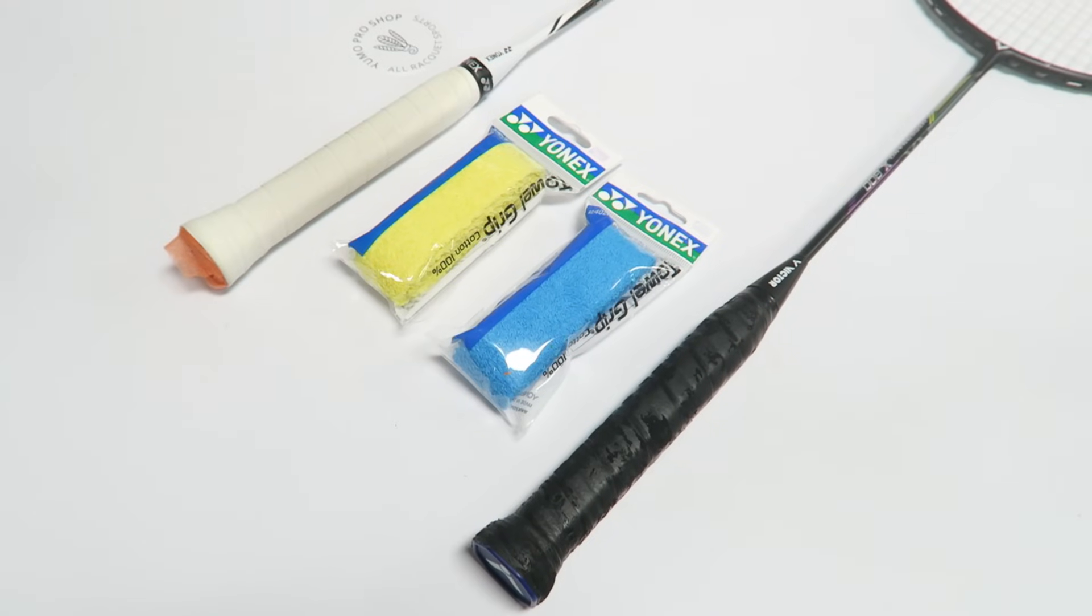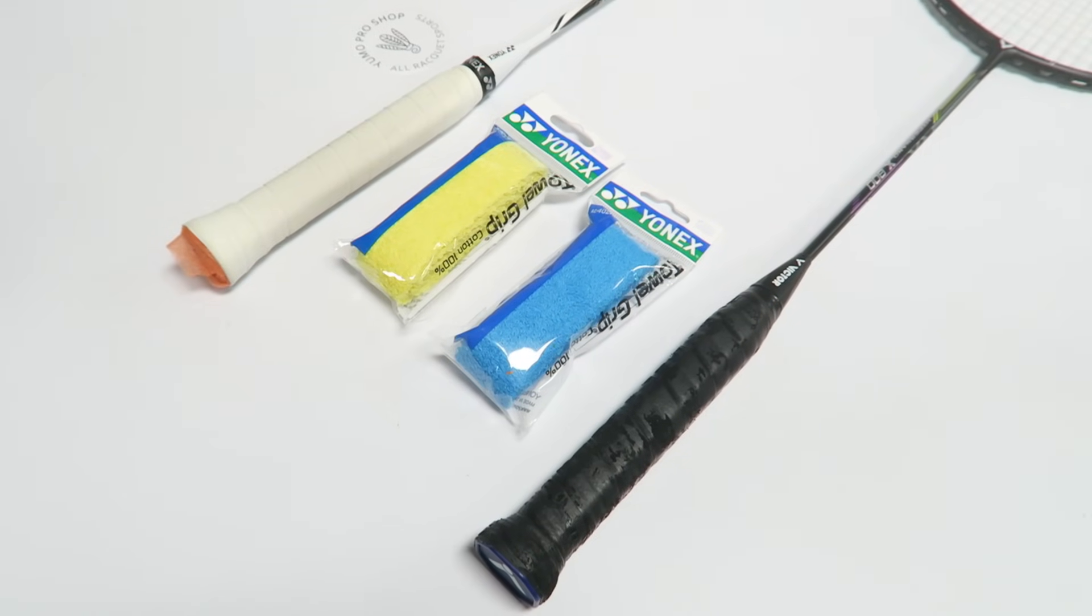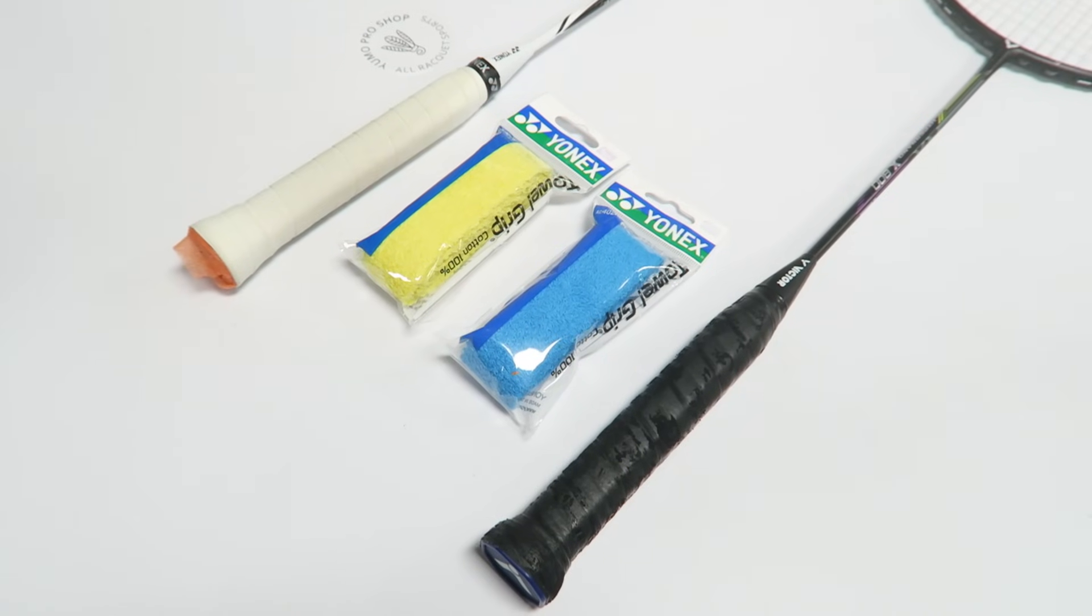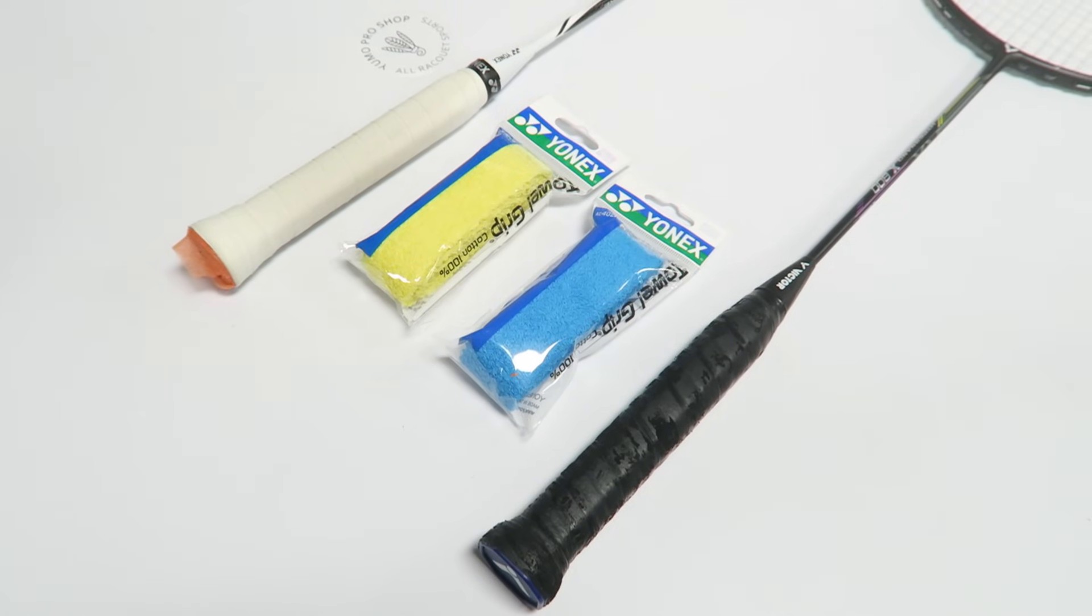Towel grip is essentially a replacement grip that is made with cotton instead of the usual polyurethane. I call it a replacement grip because people generally will replace the original grip instead of putting it on top because it is quite thick.